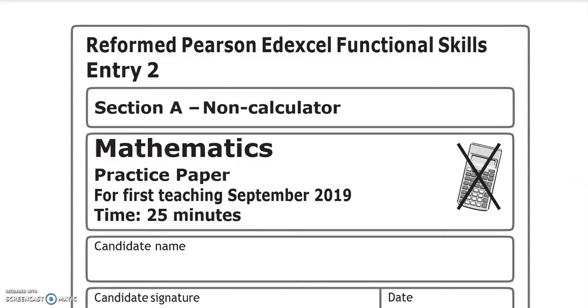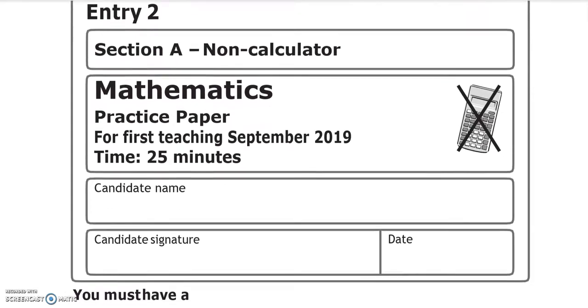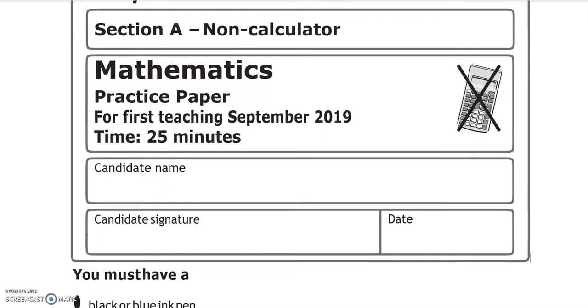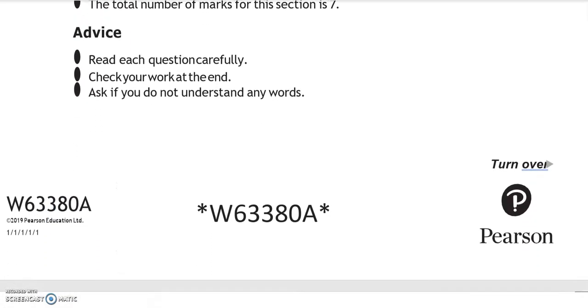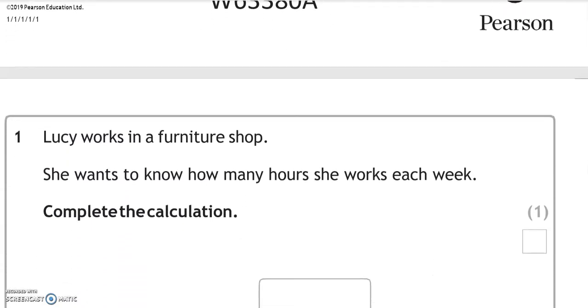This is an entry to the Functional Skills Maths paper from Edexcel. It's split into two parts. This is the first part where you can't use a calculator, and there is a total of seven marks for this part. There is a second part where you can use a calculator as well.